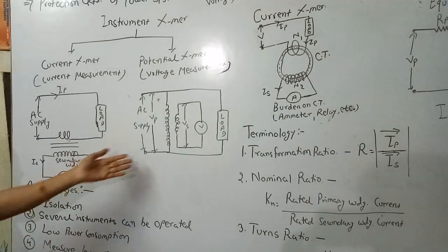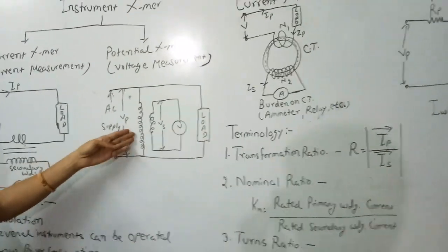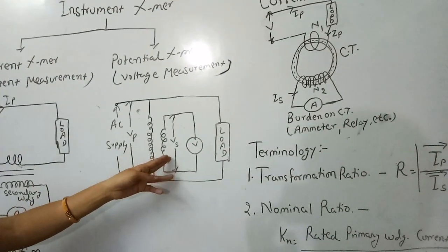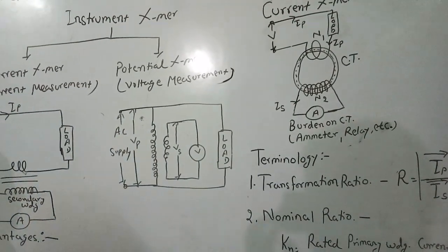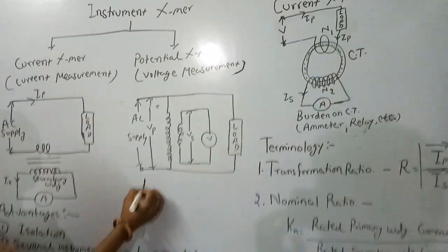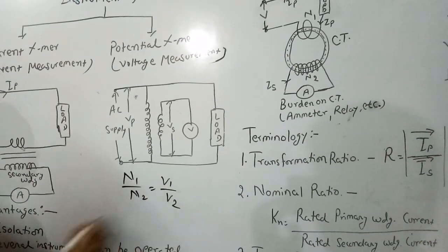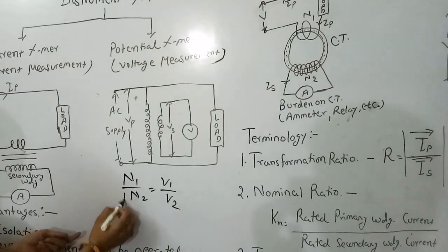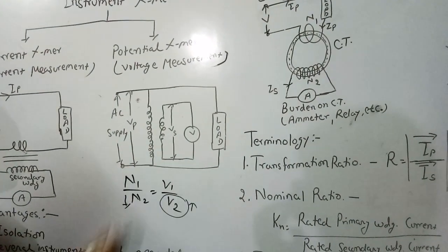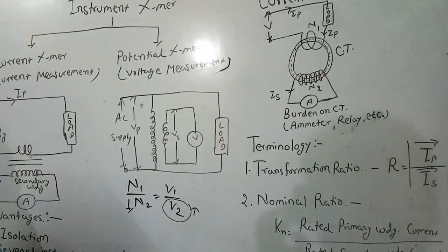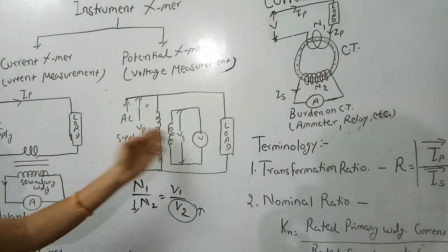The potential transformer also has a primary and secondary winding with many turns. Using the relation N1/N2 = V1/V2, if we have fewer turns in the secondary, then the voltage is reduced on the secondary side, and we can measure the secondary voltage which is equivalent to the primary voltage.